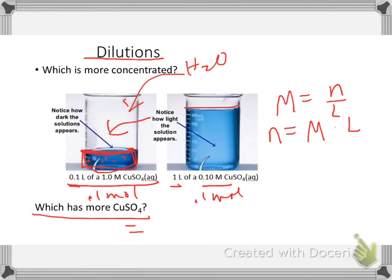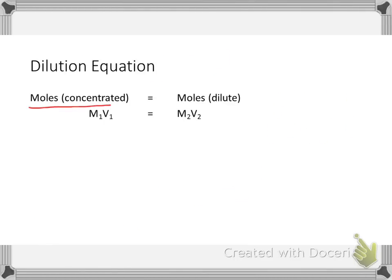So the whole idea is that if the moles of the concentrated, and I'm talking about moles of the solute, is equal to the moles dilute, then if I use that formula where N equals M times V, this is equal to mols, this is equal to mols. So I have this dilution formula, M1V1 equals M2V2. So it's known as the dilution formula, and it comes in very handy.